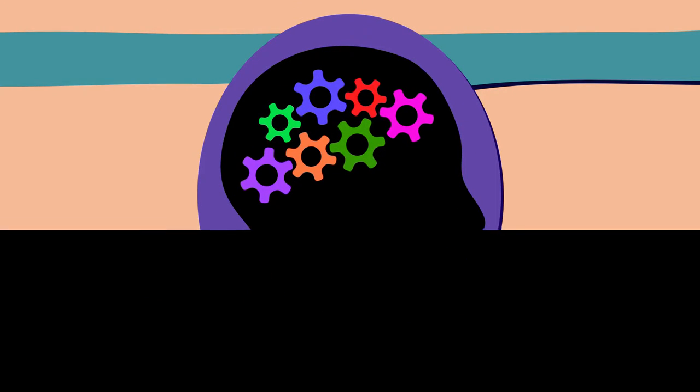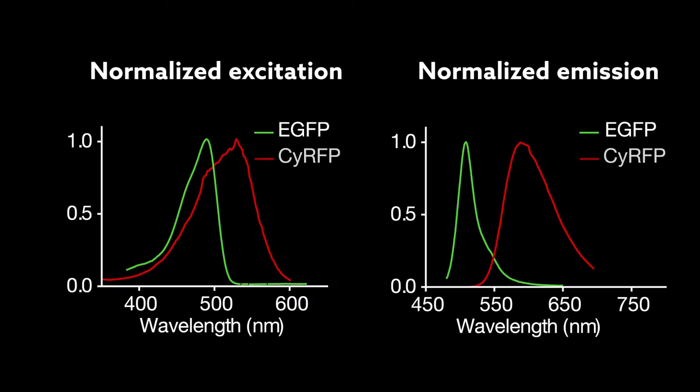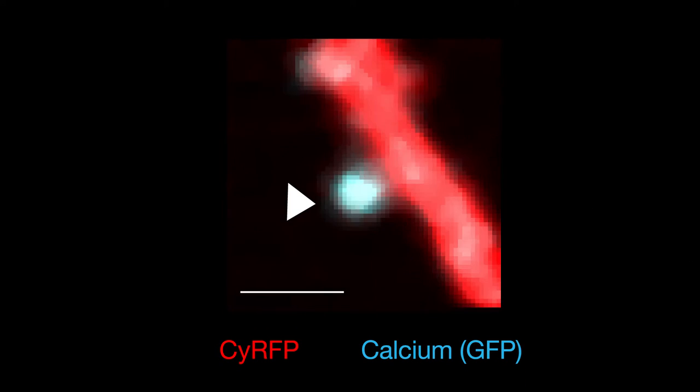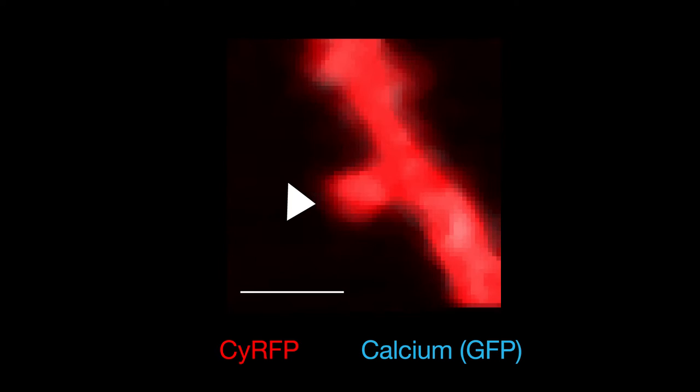To expand their options, the team developed a new red fluorescent protein named CyRFP that can be visualized at the same time as GFP. They then tested whether it would be useful as a structural marker while using a GFP-based sensor to monitor calcium flow.